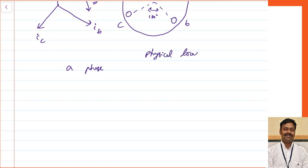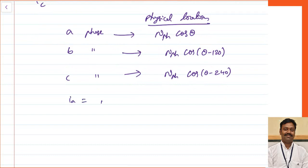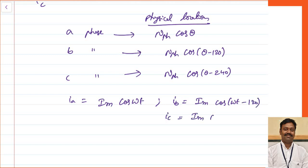For phase A, the physical location can be represented as n_phase × cos(θ). For phase B, it will be n_phase × cos(θ − 120°), displaced by 120 degrees. For phase C, it is cos(θ − 240°). Similarly, the currents are: Ia = I_max cos(ωt), Ib = I_max cos(ωt − 120°), and Ic = I_max cos(ωt − 240°).